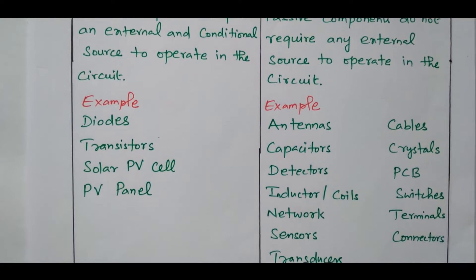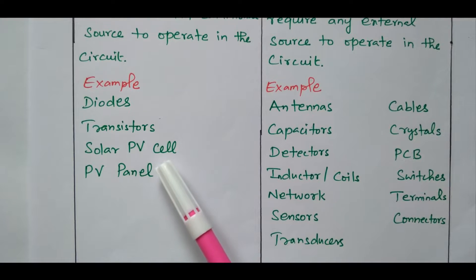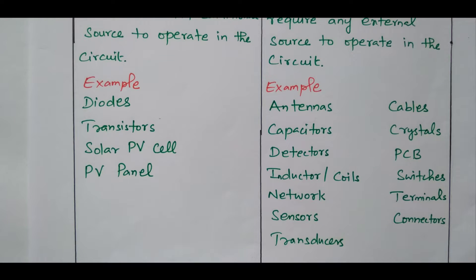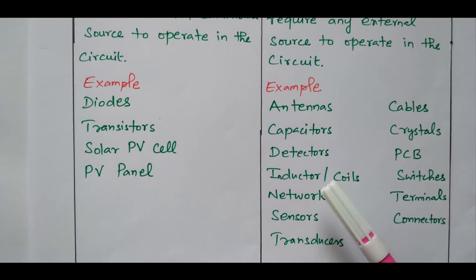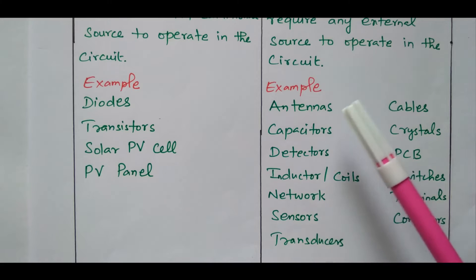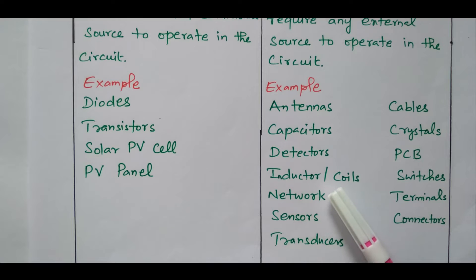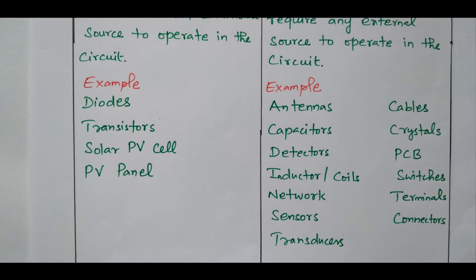Now we will see some examples. As already discussed, diode, transistor, solar PV cell, and PV panel are all examples of active components — they are able to deliver energy to the circuit and achieve power gain, requiring an external source. For passive components, they will not deliver energy but will receive it, with no specific power needed to operate and no power gain. Examples of passive components include antennas, capacitors, detectors, inductors or coils, networks, sensors, transducers, cables, crystals, PCBs, switches, terminals, and connectors. These are all passive components — while connected in the circuit, they receive energy from the circuit without any amplification.